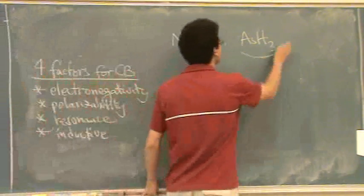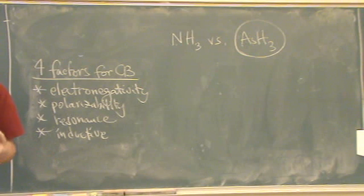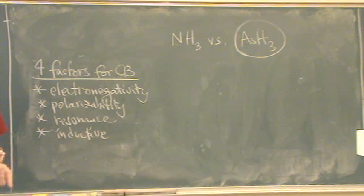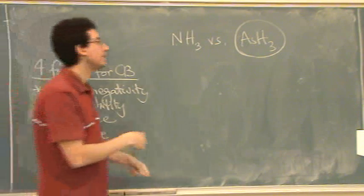Which one's the stronger acid, on the left or the right? Yeah. This one's the stronger acid, because of what factor? Polarizability. Size, it's bigger, so it can hold that negative charge on the conjugate base better. Okay?